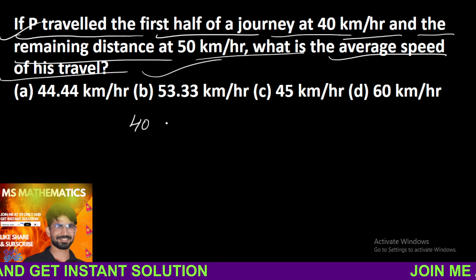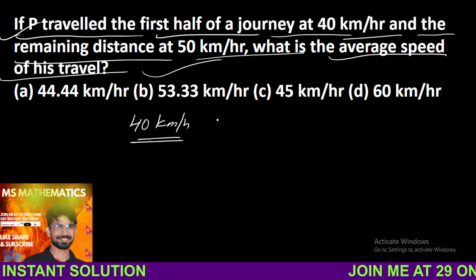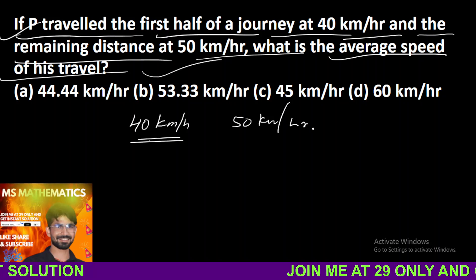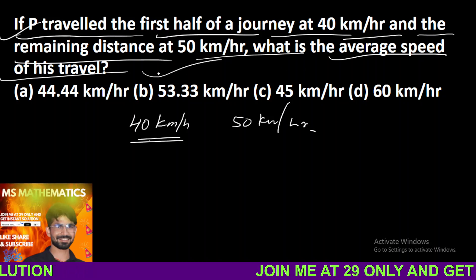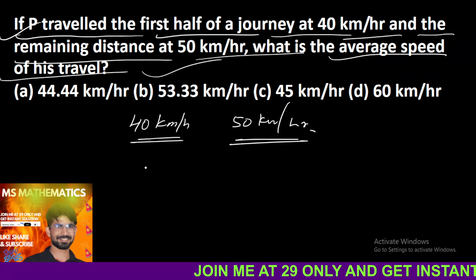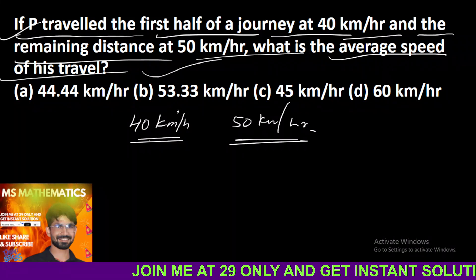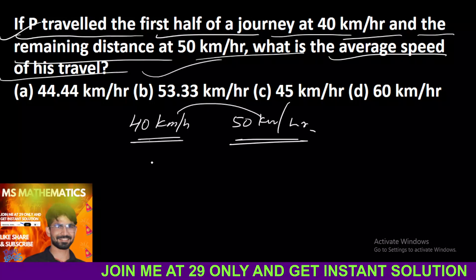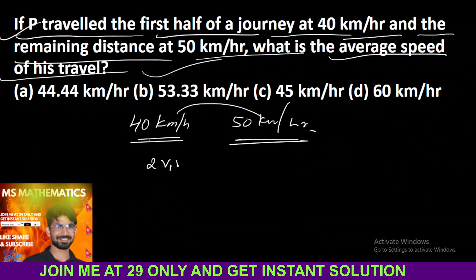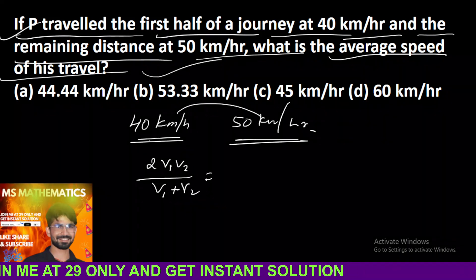The first half journey is 40 km per hour speed, and the second half journey is 50 km per hour speed. So what do we need to do? We need to find the average speed. Average speed का formula तो सब लोगो को पता है — अगर half half distance, यानि equal equal distance हो, और speed दो different हो, तो उसका formula होता है: 2 into V1 into V2 upon V1 plus V2.